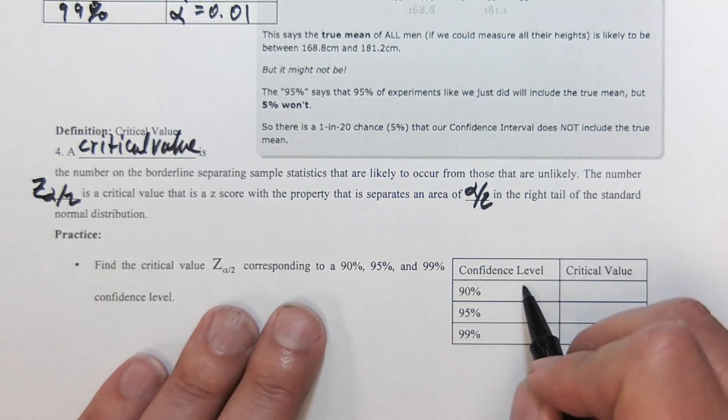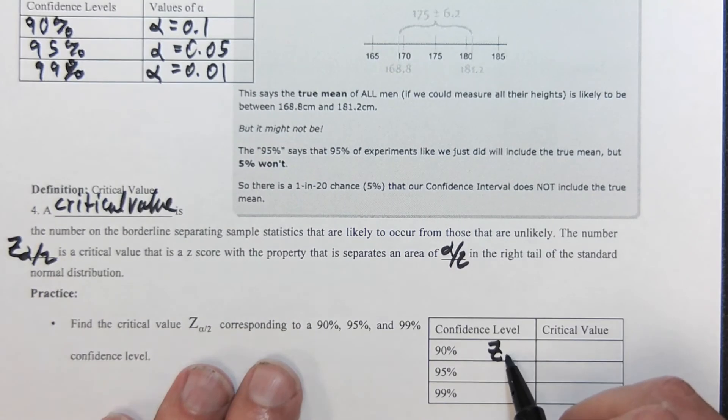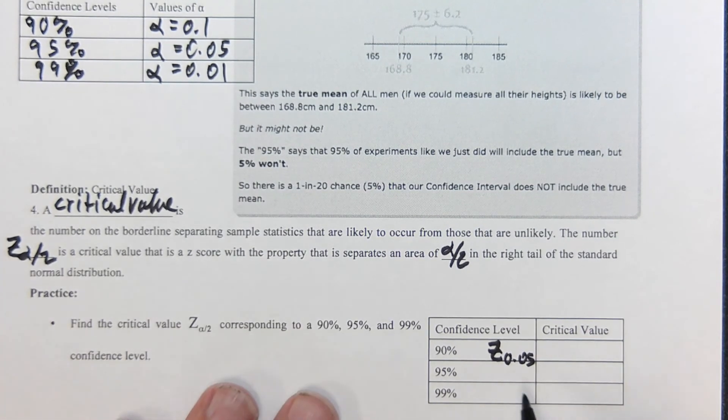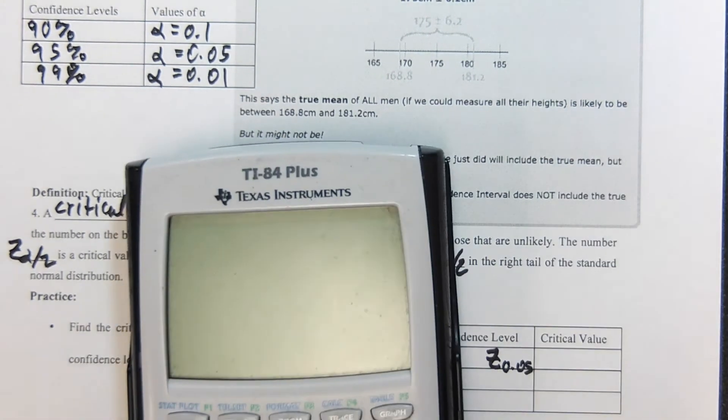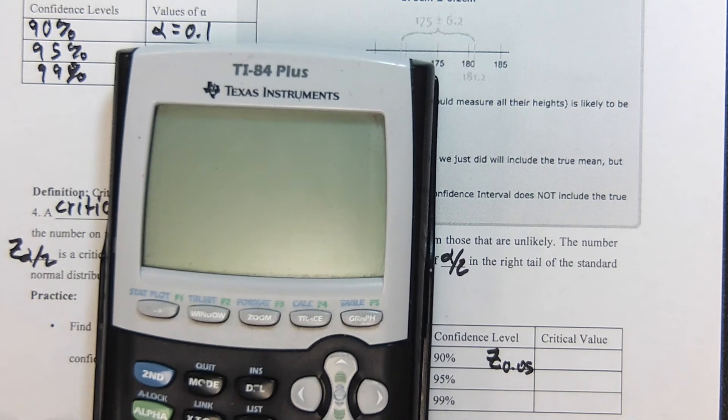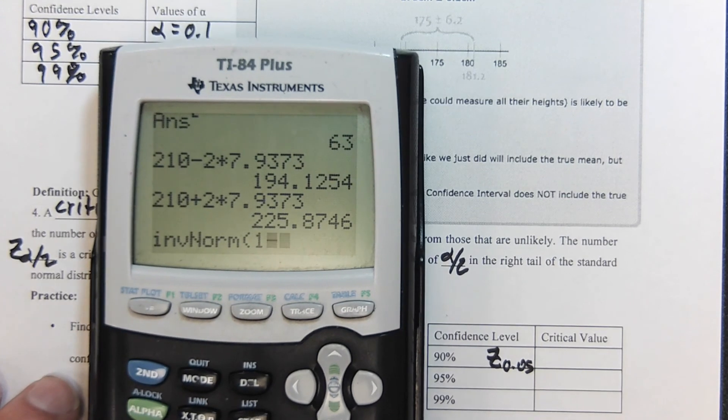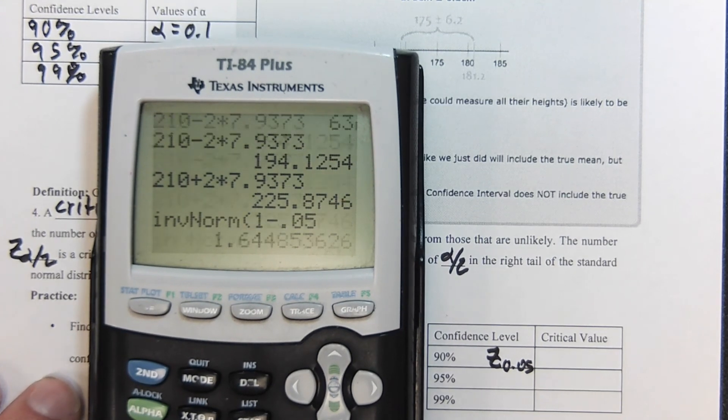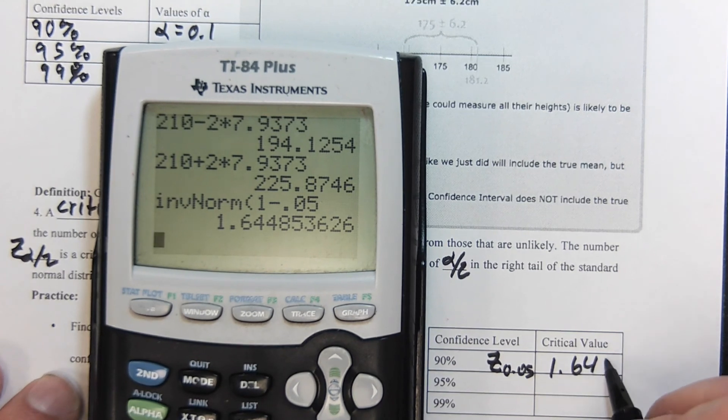So if this is the confidence level, then what we're looking for is Z sub alpha. In this case, if we look up here, alpha is 0.1, so this is going to be Z sub 0.05. Remember, to find that Z value, that's the area in the right, and my inverse norm only knows area to the left.